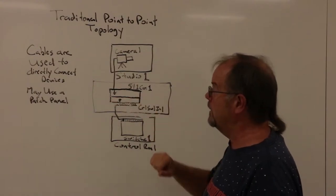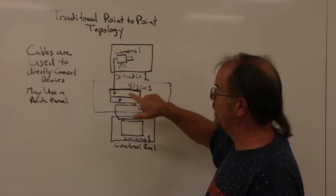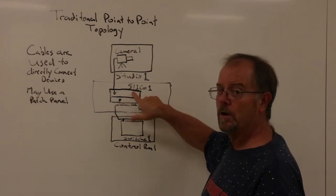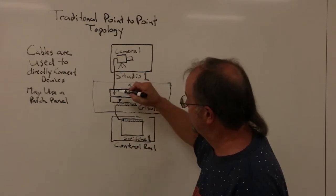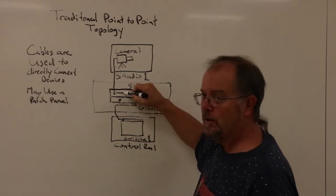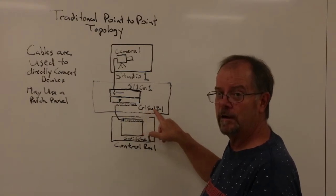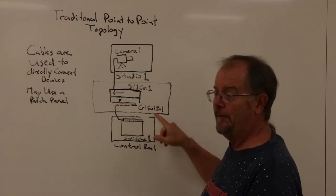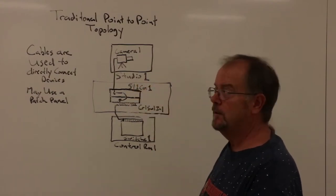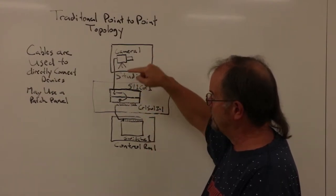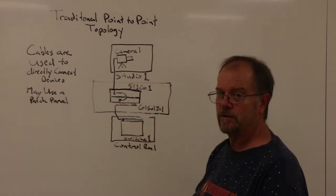If they want to connect camera 1 to switcher 1, they'll go to the patch panel, find Studio 1 Camera 1, and put a patch cord in there. Then they'll go to Control Room 1 switcher 1 input 1, and patch that cable into that port. So now, Camera 1 is directly plugged into input 1 of switcher 1 in the Control Room.